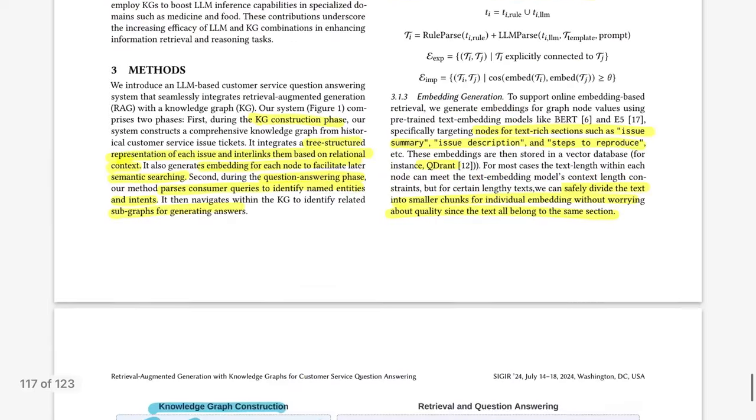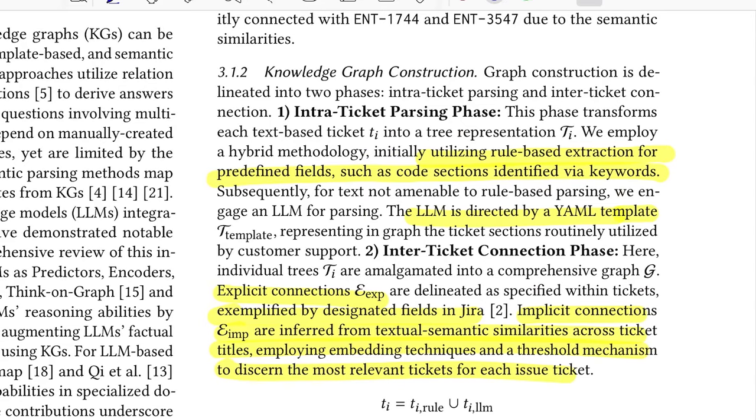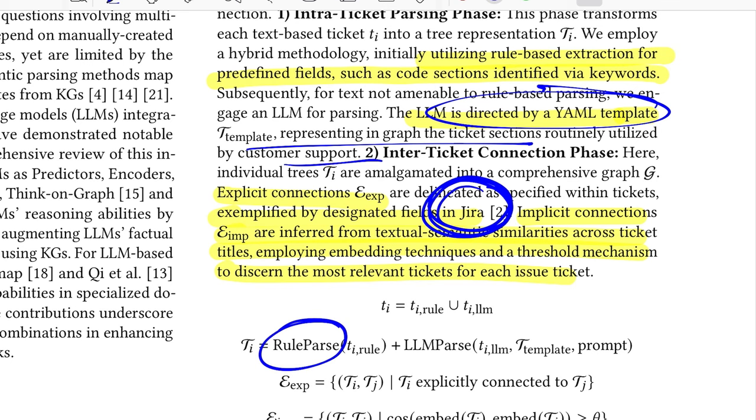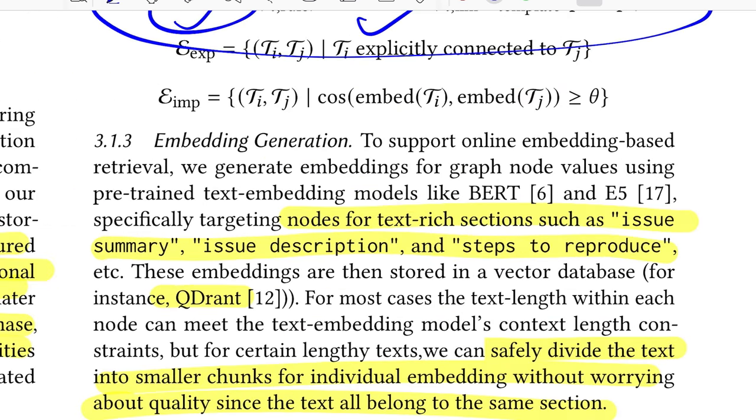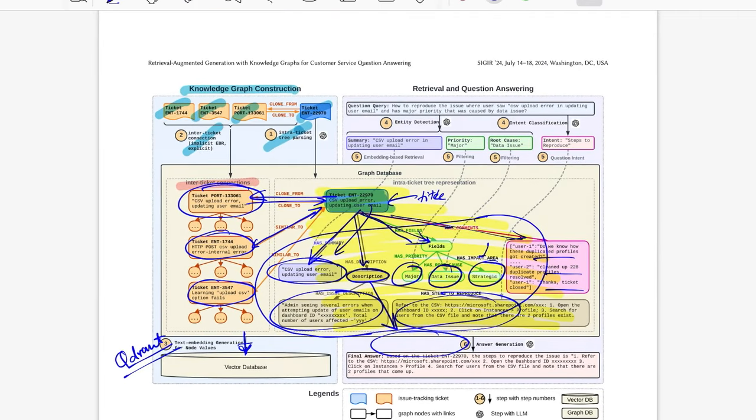They have a YAML template for extracting things. They're using JIRA as an issue tracking platform. They have two ways of how they parse information from description: one is LLM-based, another is rule-based. Things that are pretty explicit in terms of having a certain pattern, like code snippets, are extracted based on rules using grammar for the code prefix and suffix. Rest of the times it might go to the LLM. So they use a combination of rule plus LLM to parse out this information. The embeddings model that they've used for the text-rich sections is BERT and E5 model, and the vector database is Quadrant.